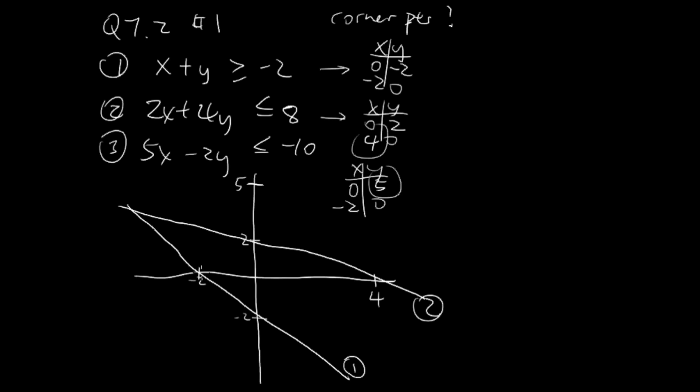Line 3, we have x is negative 2, y is 5. So right here.